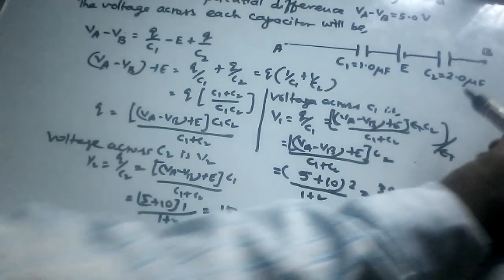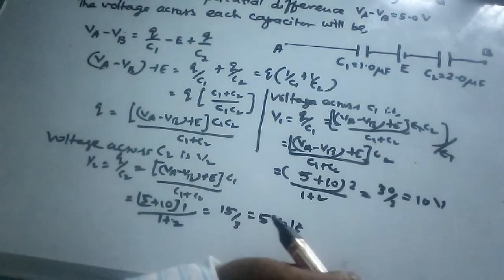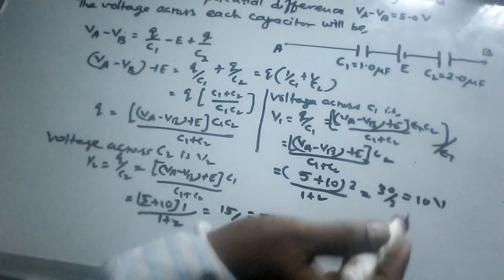The voltage across C2 is 5 volts, and across C1 is 10 volts.